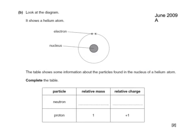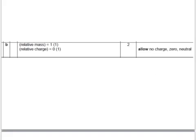Here's an exam question. Look at the diagram. It shows a helium atom, labeled. The table shows some information about the particles found in the nucleus of a helium atom. Complete the table. Well, the relative mass of a proton is 1. That's also the case for a neutron. The relative charge of a proton is plus 1, but for a neutron, that's 0. And there's the answers. Don't be confused by these numbers in brackets here. That's just the mark scheme.